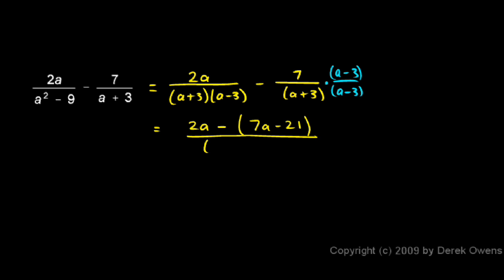And that's all over a plus 3 times a minus 3. And I can simplify the top a little bit. My 2a minus the 7a gives me a negative 5a and then I have a minus negative 21, so that's plus 21.